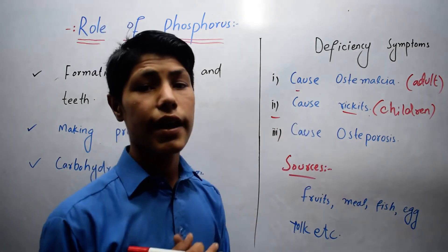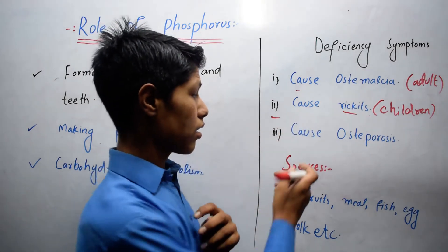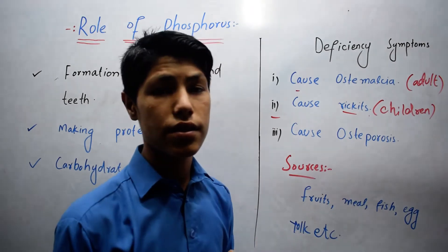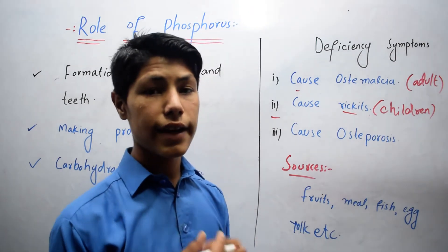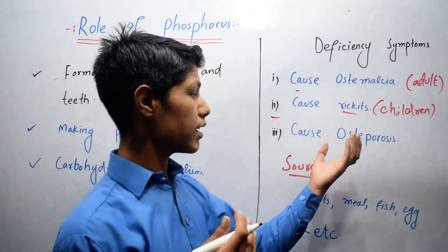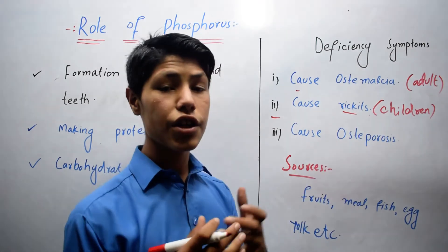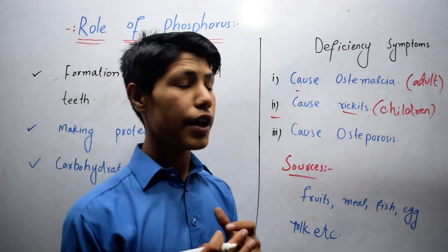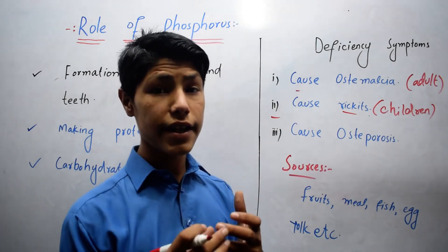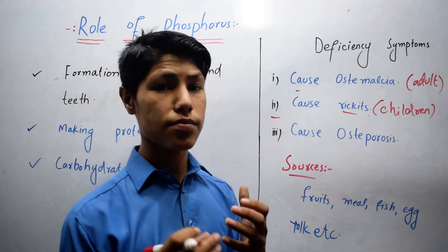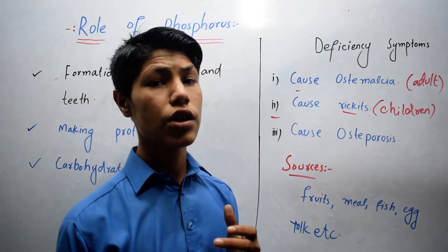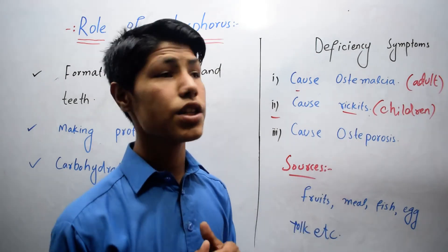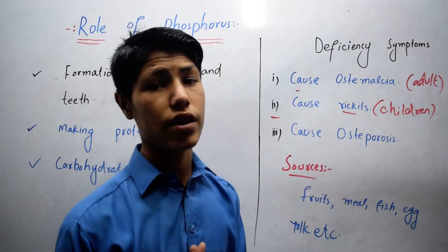The third deficiency symptom is it causes osteoporosis. It is also a condition in which teeth become soft and porous, and teeth develop small holes due to deficiency of phosphorus.